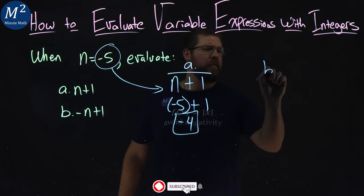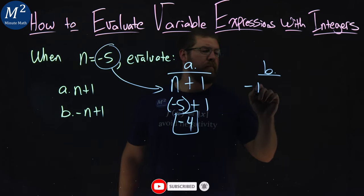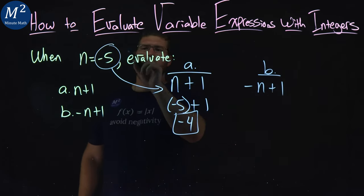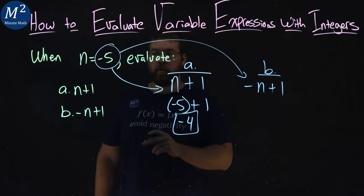What about the next one? Part B. Same process. Rewrite negative n plus 1. We're going to again take this negative 5 and plug it in for the n.